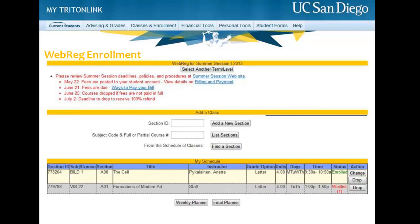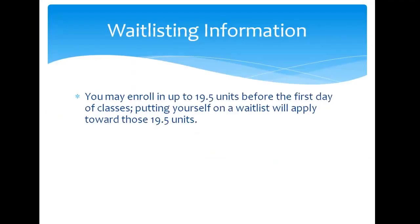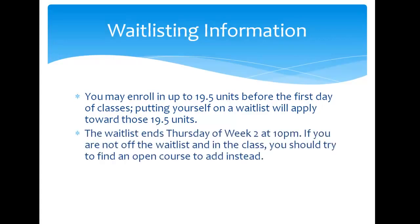There are a few more pieces of information you should know about waitlisting. You may enroll in up to 19.5 units before the first day of classes, and putting yourself on a waitlist will apply towards those 19.5 units. The waitlist ends Thursday of Week 2 at 10pm. If you are not off the waitlist and in the class, you should try to find an open course to add instead.